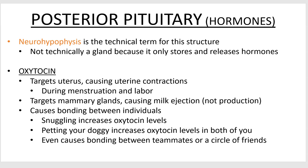Oxytocin is produced naturally and causes uterine cramping — so you can blame oxytocin for menstrual cramps. It also targets the mammary glands and causes milk ejection, so you need both prolactin and oxytocin to feed a baby. Interestingly, oxytocin also causes bonding — snuggling with a loved one increases oxytocin levels, and it even works between humans and their dogs, and among groups of friends.